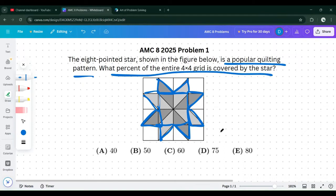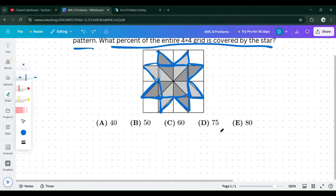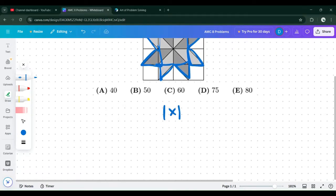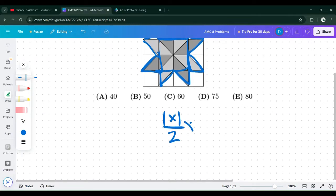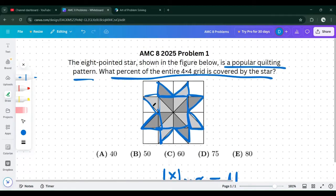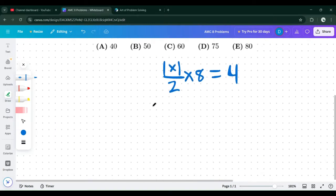For the triangles, the area of each triangle is one times one divided by two. Because to find the area of a triangle, it's leg times leg divided by two. And we have eight of these triangles.